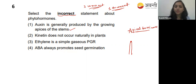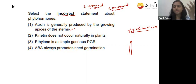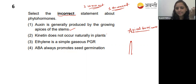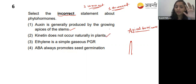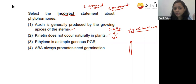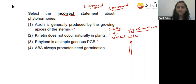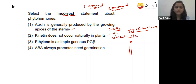The first cytokinin discovered was zeatin, from coconut milk. Kinetin does not occur naturally in plants - that is correct. Option three - ethylene is a simple gaseous plant growth regulator. Yes, this is a gaseous hormone - that is also correct.